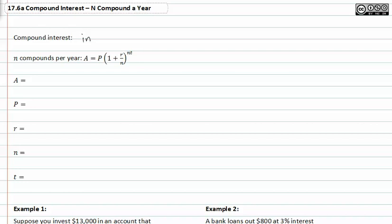So here's the formula: we have an amount A. It's the future amount, that's how to remember that. P represents the present amount.